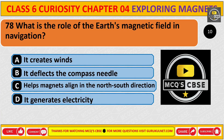What is the role of the Earth's magnetic field in navigation? The correct answer is C. It helps the magnet align in the North-South direction.